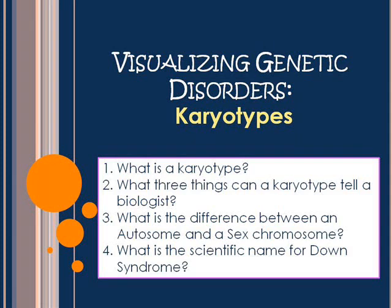One of the tools that scientists and biologists will use when they're looking into whether or not someone has a genetic disorder is a karyotype. This video is going to go through the basics about karyotypes: what is a karyotype, what three things can a karyotype tell a biologist, what's the difference between an autosome and a sex chromosome, and what's the scientific name for Down syndrome.